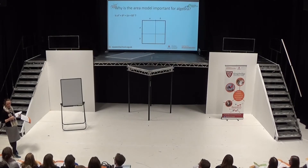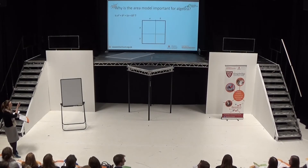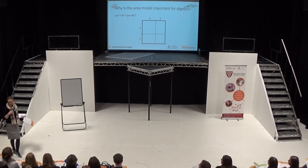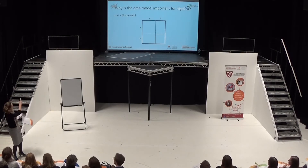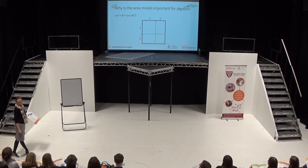This is early secondary content. We'll talk a little bit about how common it is to see that misconception. The area model is just such a lovely exposition of what it is. Some of our primary colleagues might step back a little — just have a look, and then I'll ask someone secondary to explain what (A+B) squared is and how the area model exposes it.